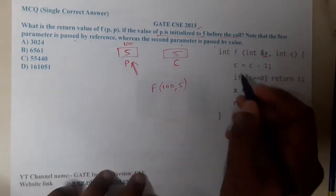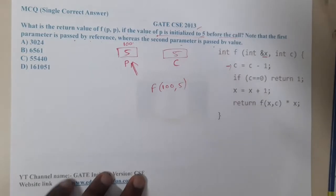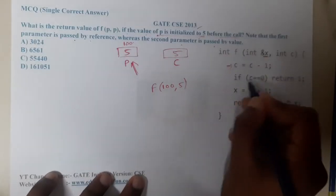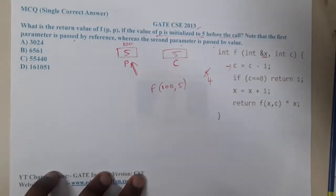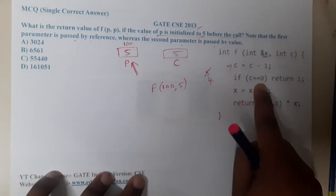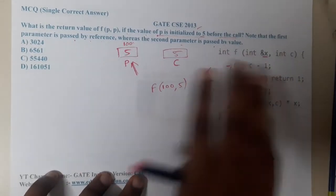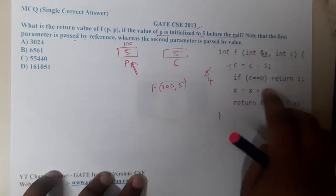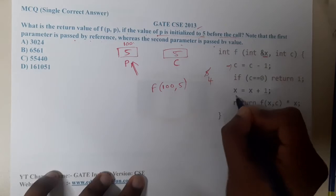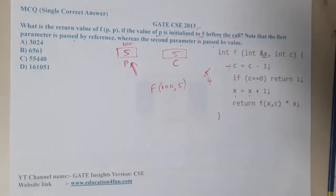The first step is we are reducing c minus 1, so the value of c becomes from 5 to 4. Now we are checking if c equals 0 or not. It is not equal, so let us continue with this step.